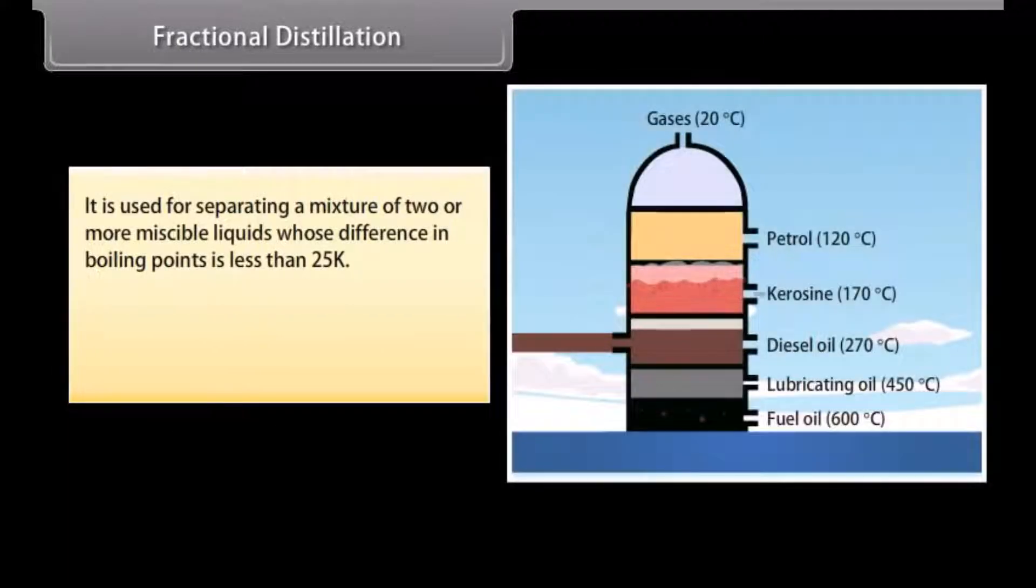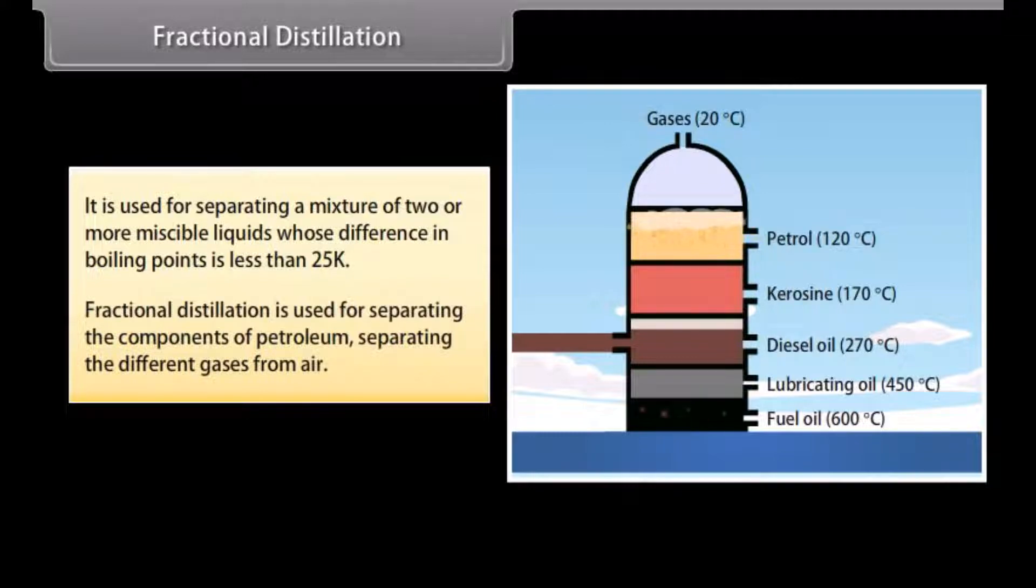Fractional distillation is used for separating a mixture of two or more miscible liquids whose difference in boiling points is less than 25K. Fractional distillation is used for separating the components of petroleum, separating different gases from air, etc.